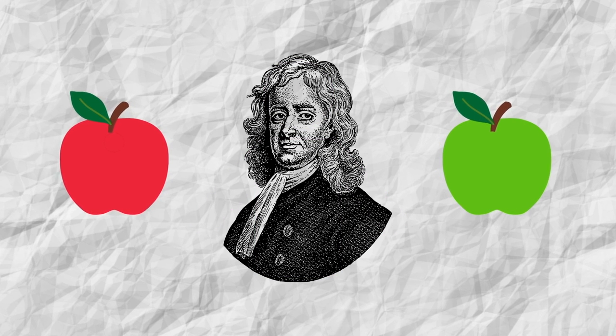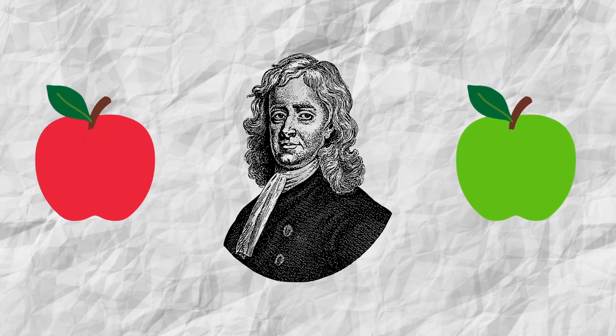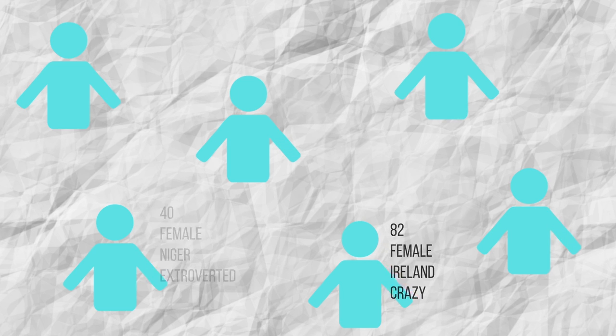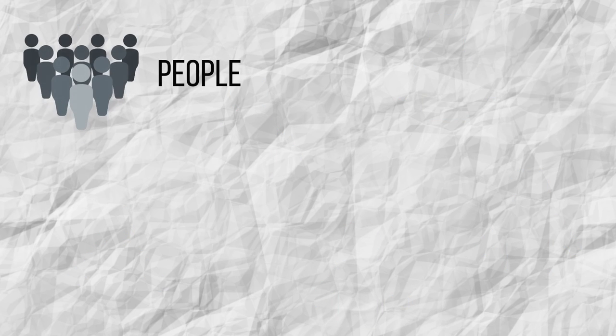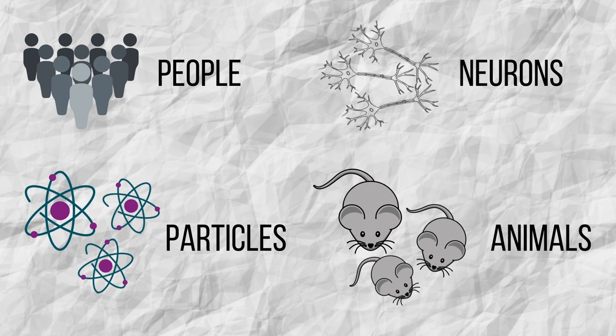Did Newton care about the color of the apple that fell on his head when he developed his law of universal gravitation? And it doesn't end there. Not only do we not need to know the characteristics of people, but in many situations, it doesn't even matter that they're people. That is, universality also manifests itself in such a way that systems for people, neurons, particles, or animals exhibit the same collective behaviors.